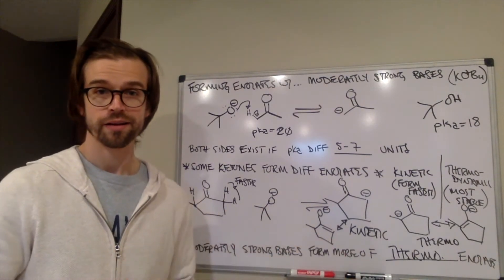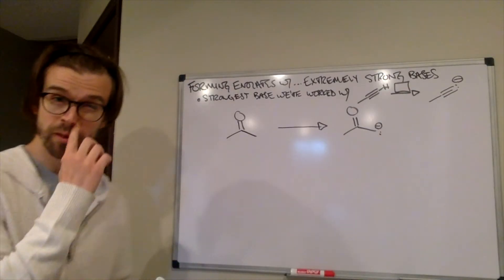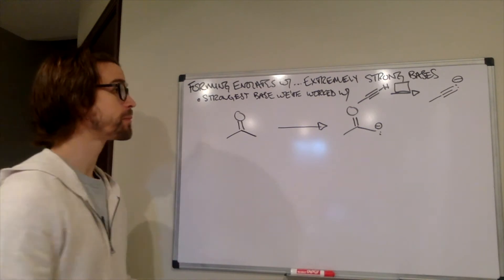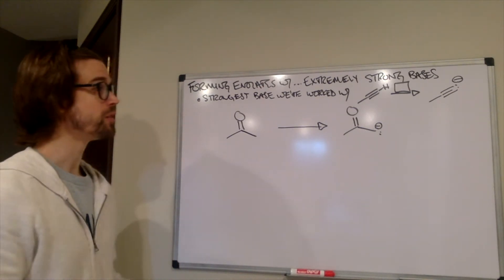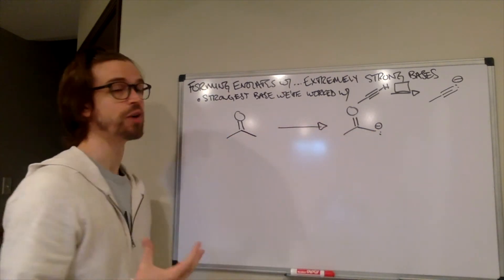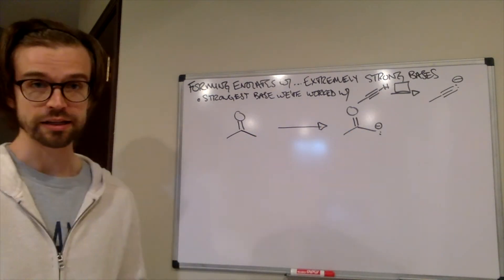What else can we form there? So, we have our moderately strong bases that form the enolates. And it turns out these days, lots of bases to choose from. We also could use an extremely strong base. And that's going to make the enolate unidirectionally. So, no equilibrium here, just forward movement to that enolate.